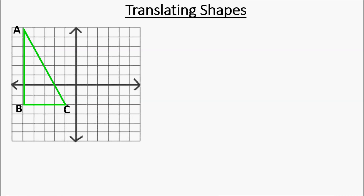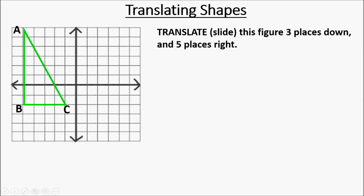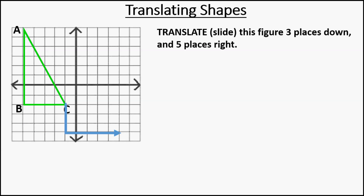Now we're going to translate an entire shape, which is basically the same thing we've been doing but now we're applying it to many points at once. We have this triangle ABC — the green triangle. We are going to translate this triangle three places down and five places right. So there are two changes going on. We're moving something down and right. If you look at point A, it's going down and right. Point B, down and right. Point C, down and right.